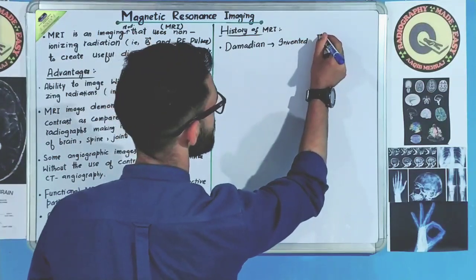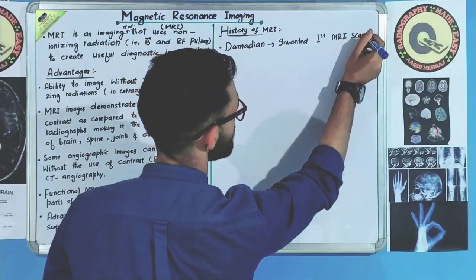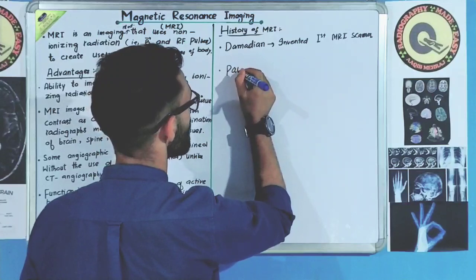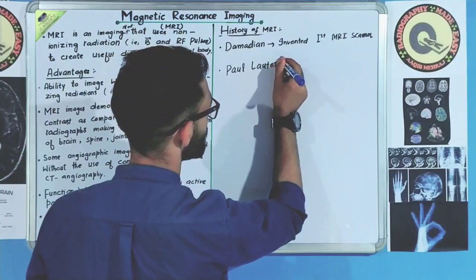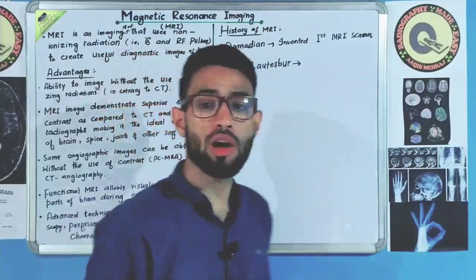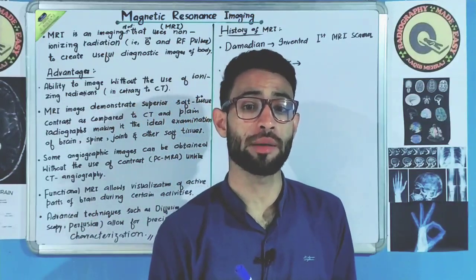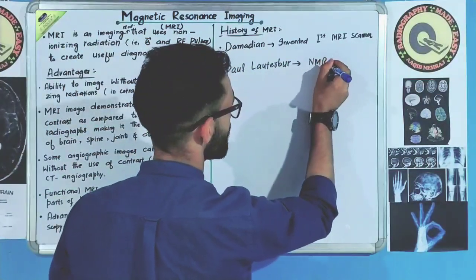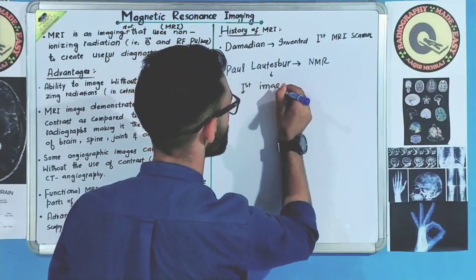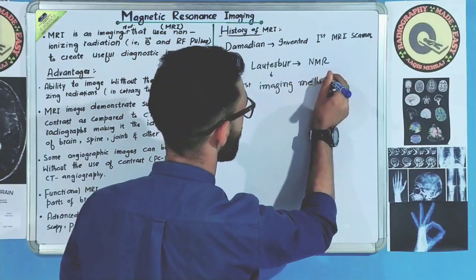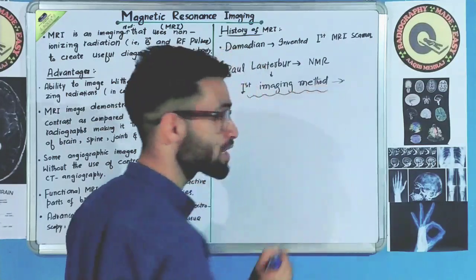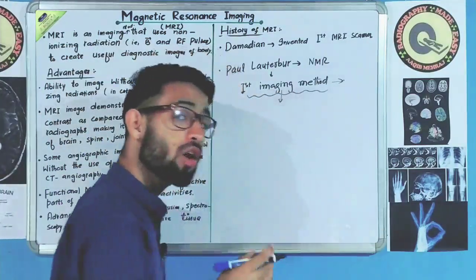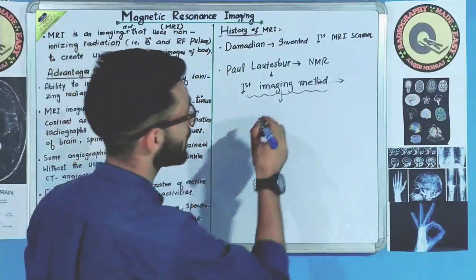Around the same time, there was another scientist — an NMR chemist — named Paul Lauterbur. Lauterbur developed the first imaging method using NMR, which was similar to the imaging methods we use in MRI today. He called that method zeugmatography.